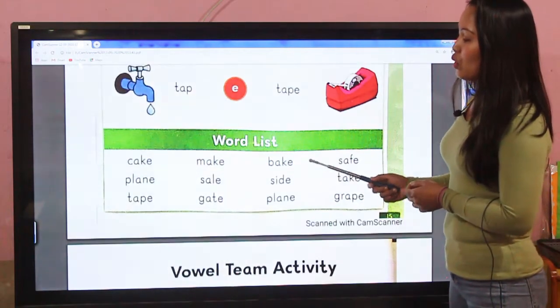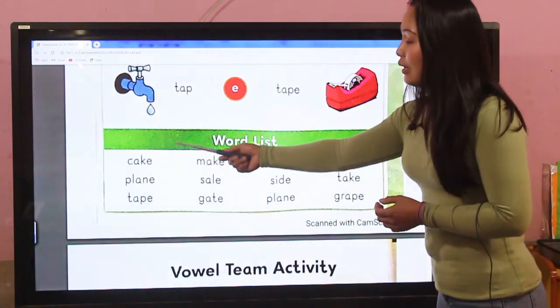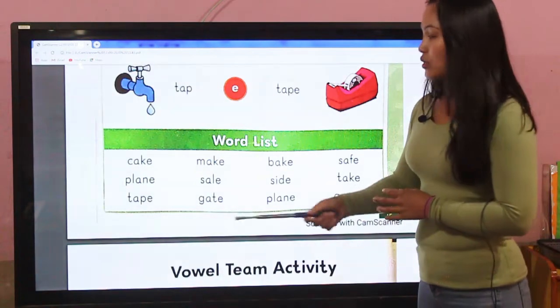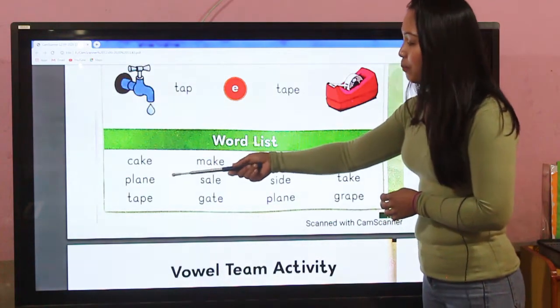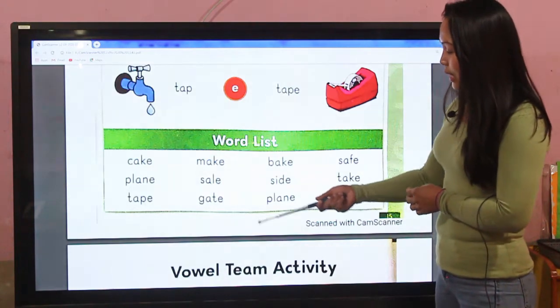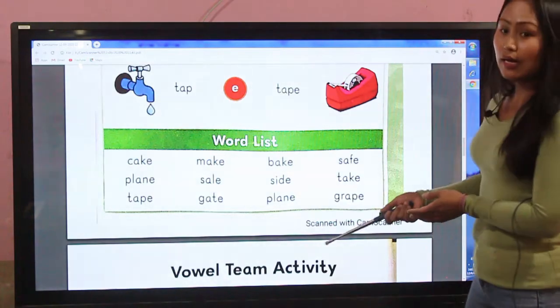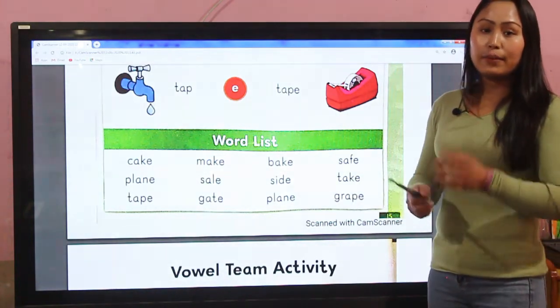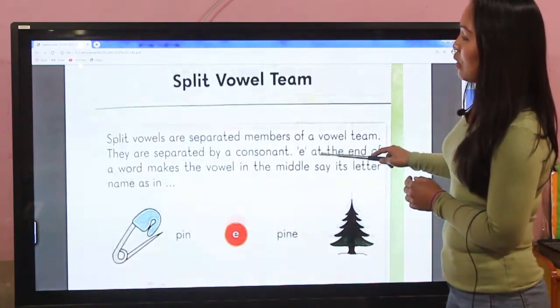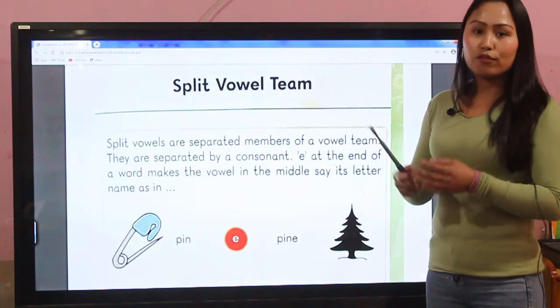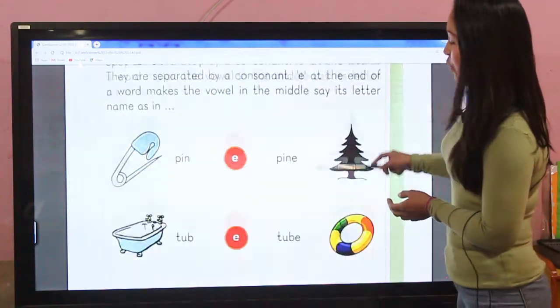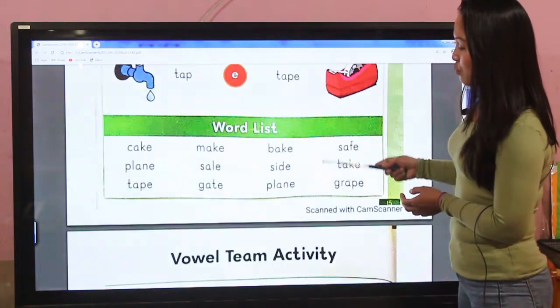Now let's see the word list. Words with e at the end - it might be cake, plan, tap, make, sell, get. When we have e at the back, this is our split vowel team.